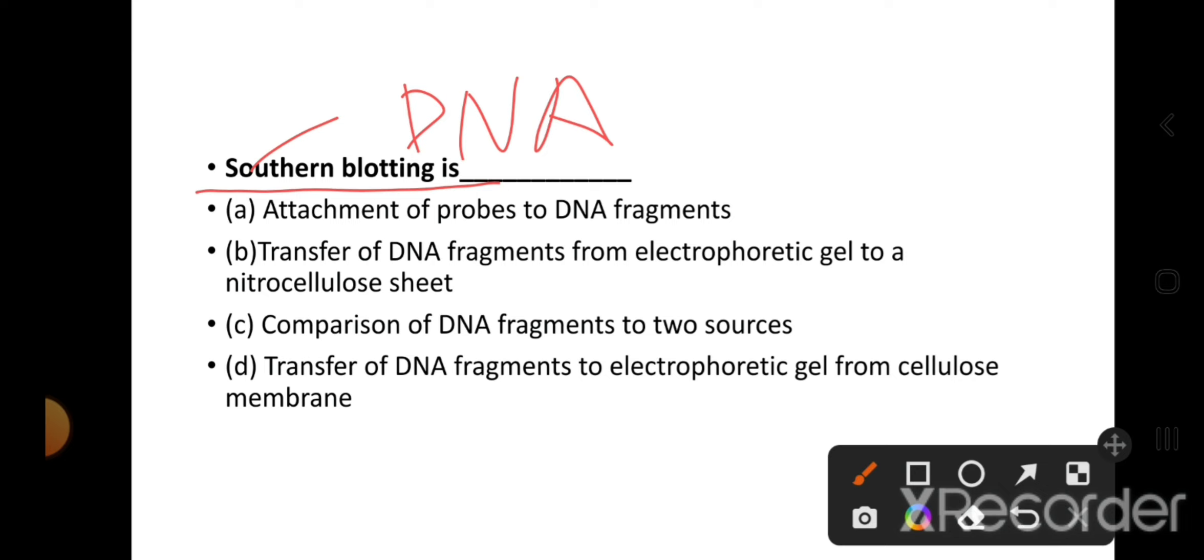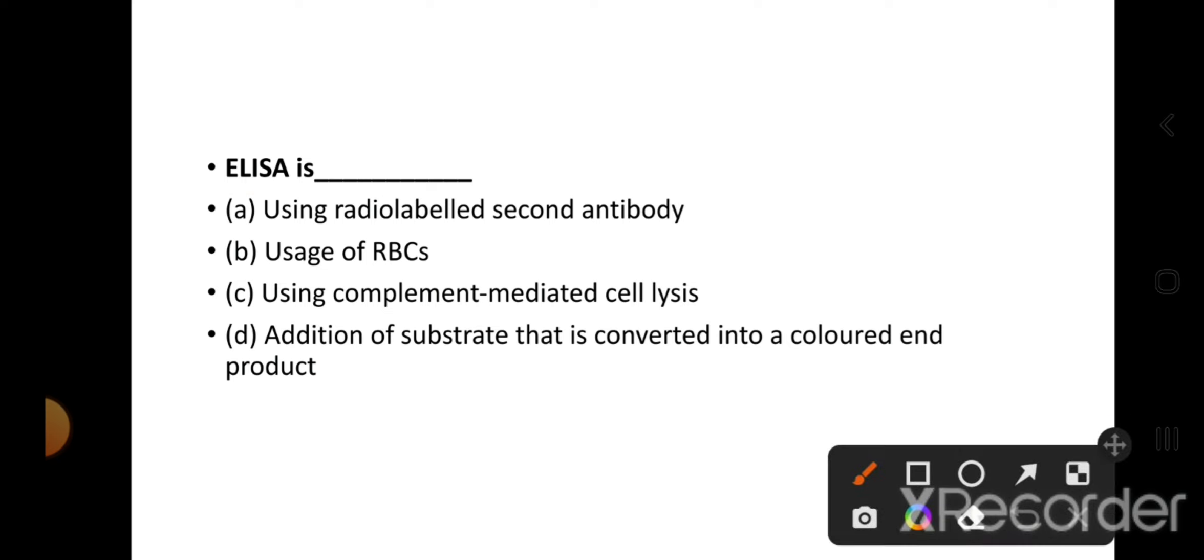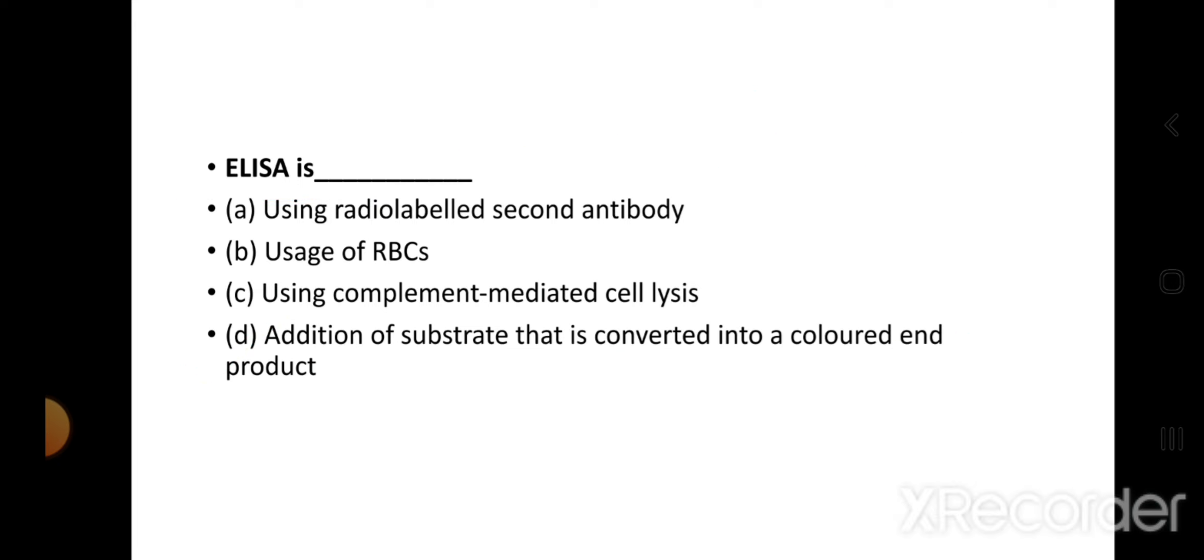ELISA - the full form is Enzyme Linked Immunosorbent Assay. Here, immunological reaction takes place, meaning antigen-antibody interaction is checked. The enzyme reaction involves adding substrate which produces a colorful product. This is the right option: addition of substrate that is converted into colored product.